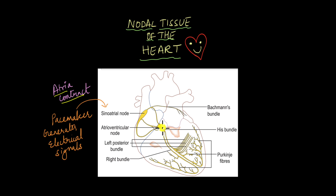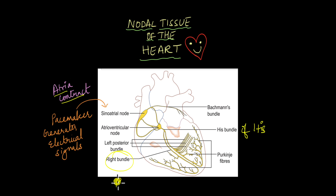From the atrioventricular node, signals are transmitted to the ventricles via a bundle of nodal tissue known as the bundle of His, named after the scientist who discovered it. The bundle of His can generate its own electrical impulses, but not as strongly as the sinoatrial or atrioventricular nodes. It then splits into two branches: the right bundle branch serving the right ventricle and the left bundle branch serving the left ventricle. These further split into tiny fibers known as Purkinje fibers, which surround the ventricles and cause their contraction and relaxation.